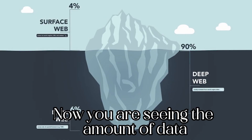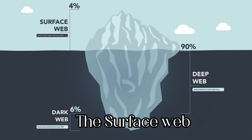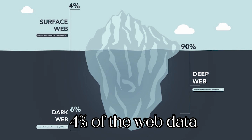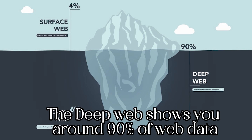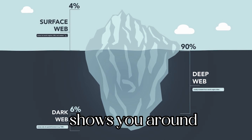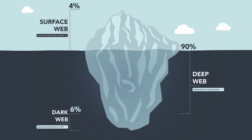Now you are seeing the amount of data that can be seen through different layers of the web. The surface web shows you around 4% of the web data. The deep web shows you around 90% of web data, and the dark web shows you around 6% of web data.